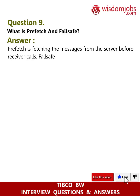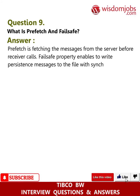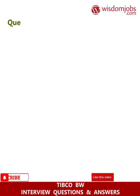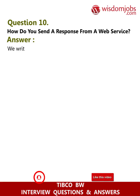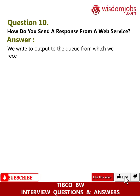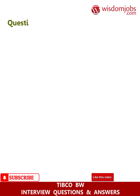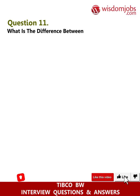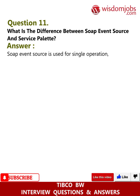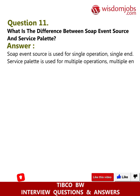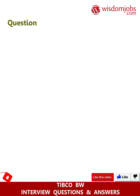Question 9: What is prefetch and fail safe? Answer: Prefetch is fetching messages from the server before the receiver calls. Fail Safe property enables writing persistent messages to a file with synchronous I/O calls. Question 10: How do you send a response from a web service? Answer: We write the output to the queue from which we received the request. Question 11: What is the difference between SOAP Event Source and Service pallet? Answer: SOAP Event Source is used for single operation, single endpoint. Service pallet is used for multiple operations and multiple end bindings like HTTP and JMS.